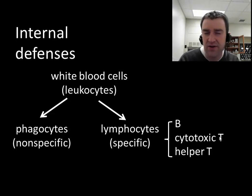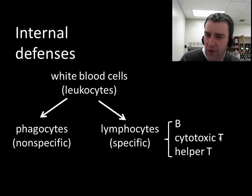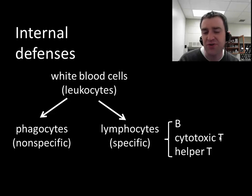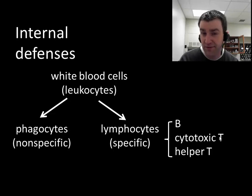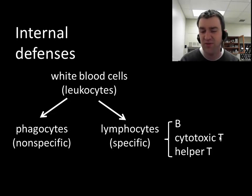Another group of white blood cells are lymphocytes, which are part of the specific or acquired immune system — I'll be talking about them more in part two. We'll eventually further subdivide lymphocytes into three broad groups: B lymphocytes, cytotoxic T lymphocytes, and helper T lymphocytes, and we'll talk about what they all do.